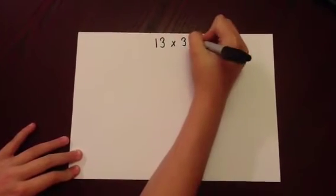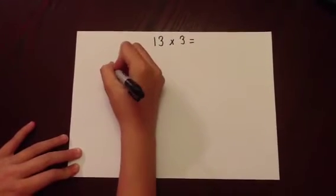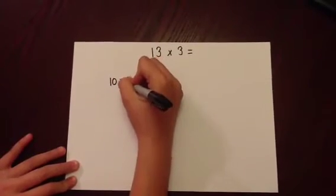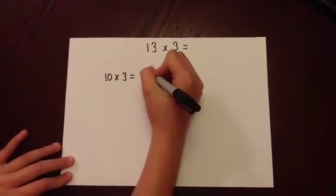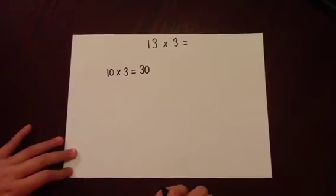To do that, we need to partition the two-digit number into tens and units. So 13 will become one group of 10 and a 3. 10 times 3 is 30, and 3 units multiplied by 3 units is 9.